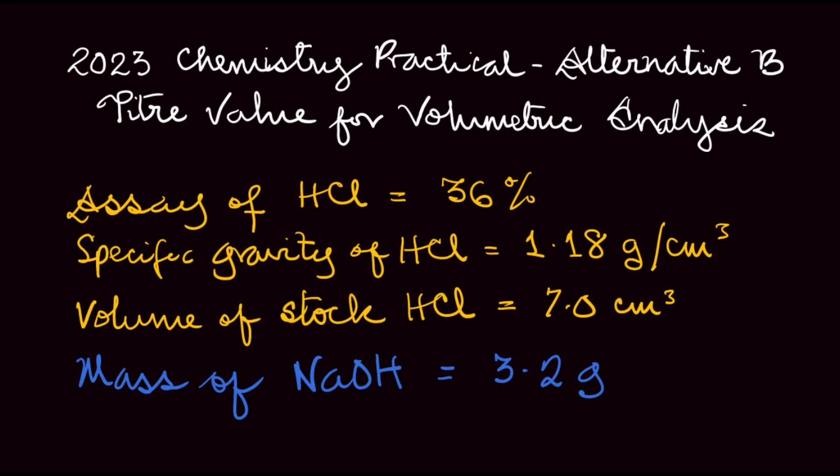In the Alternative B instruction released by WAEC, the volumetric analysis involves an acid-base titration between hydrochloric acid (HCl) and sodium hydroxide. This is a bit more straightforward than Alternative A. The acid to be used has about 36% assay and a specific gravity of 1.18 grams per cm³ — specific gravity ranges between 1.18 to 1.2 grams per cm³.